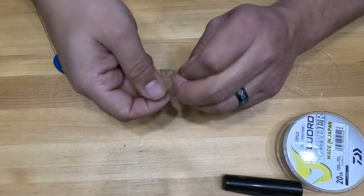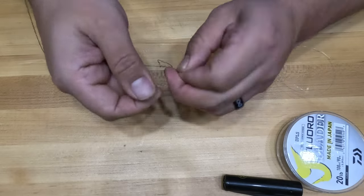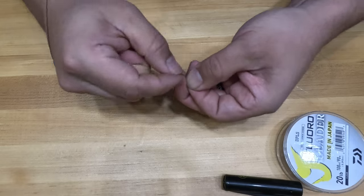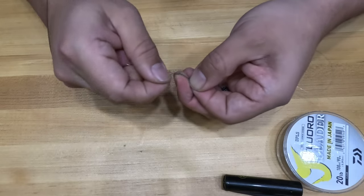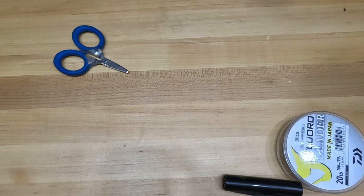The next most important thing is to take the loop that you created and wrap it backwards against the loops that you created down the braid and fluoro line. If you do this right, you'll notice that the loop disappears.